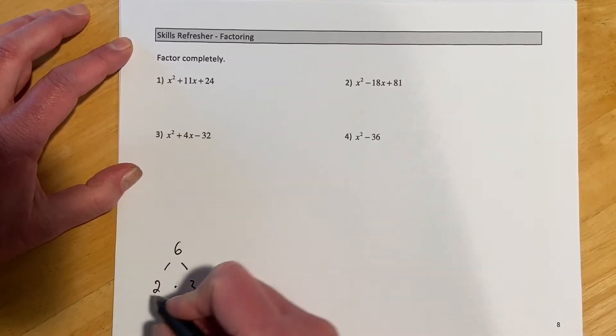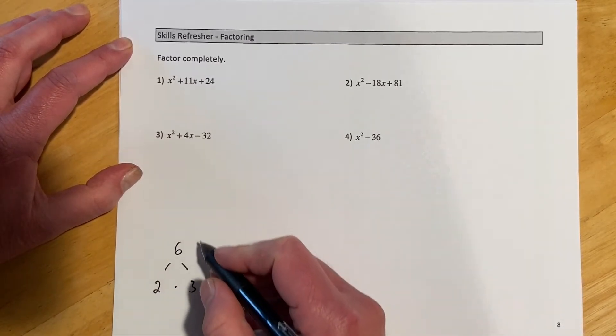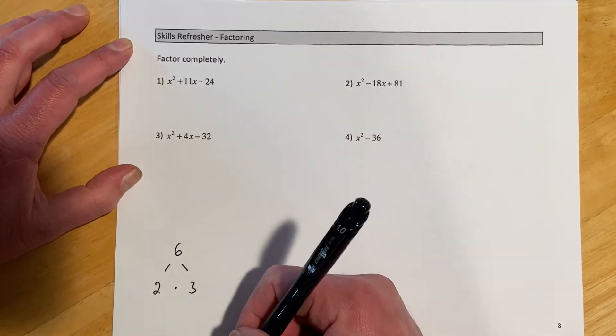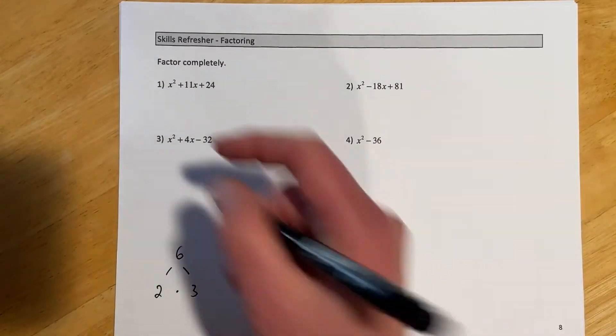So FOIL is like multiply—two times three makes six, that's the FOIL direction—and then factoring is breaking it into the pieces. So basically we're trying to reverse FOIL.